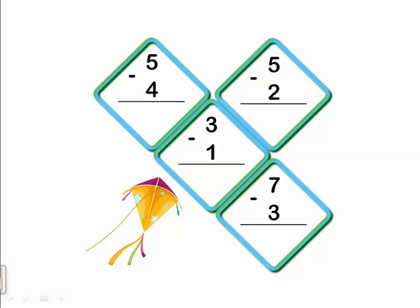Let's go to the next one: five minus two. The smaller number is after the minus, so after two: three, four, five. How many are left? Three. Five minus two equals three.